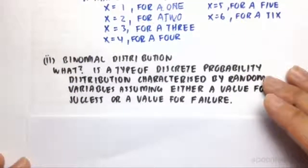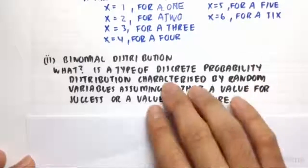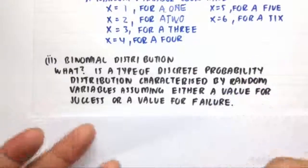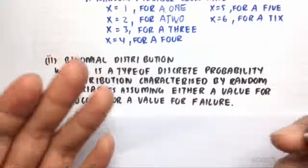We move on to binomial distributions, which is a type of discrete probability distribution. It's characterized by a random variable assuming either a value for success or a value for failure. Therefore, the random variable can only take on two values.